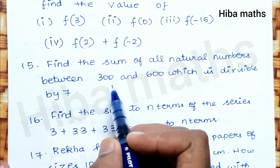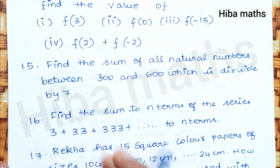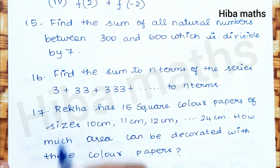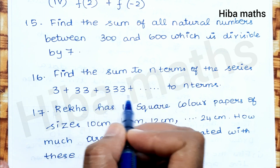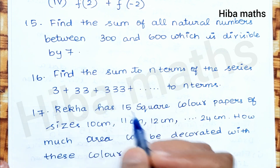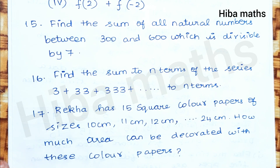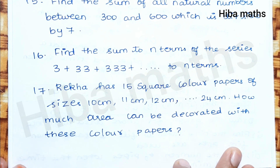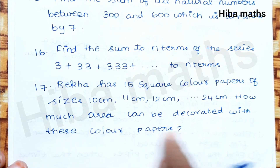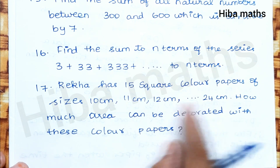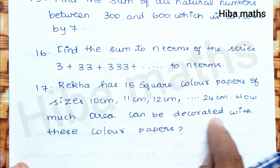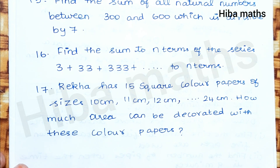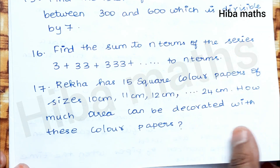Find the sum of all natural numbers between 300 and 600 which are divisible by 7. Also find the sum of the n terms of the series 3 + 33 + 333 + ... In the second chapter, for this type of sum, you can use the pattern 6 + 6... Then 5 + 55n. Let's look at a 3-sum and application-type sums and see how the area can be decorated with those colored papers — we make the sum of the same.